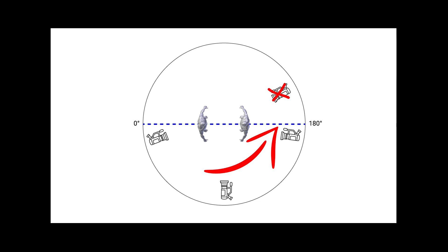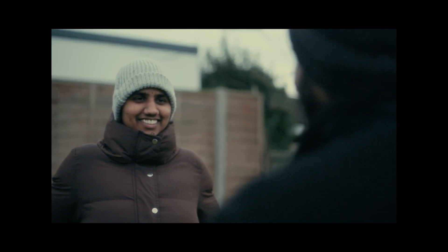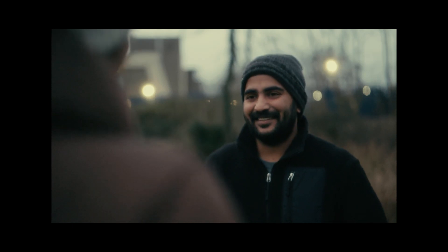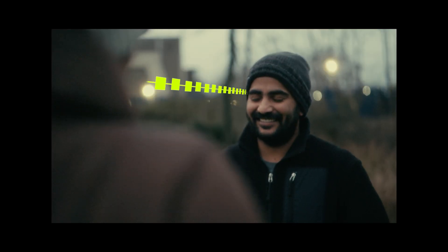Once we cross the 180-degree rule line, let's say character A and character B are in a conversation. First we establish a wide shot, then we go to close-ups. For character A we do an over-the-shoulder shot, then for character B we do an over-the-shoulder shot. So character A is right to left, and character B is left to right — and you choose accordingly.